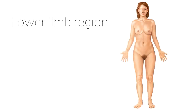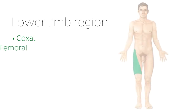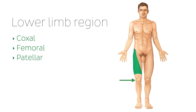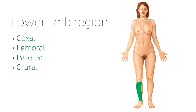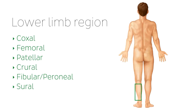Now let's move on to the lower limb, which has several regions. The coxal region refers to the lateral superior thigh at the level of the hip. The femoral region refers to the thigh. The patella region refers to the knee. The crural region refers to the anterior lower leg. And the fibular, or peroneal region, refers to the medial aspect of the lower leg. On the posterior surface, the patella and crural regions are absent — the crural region is replaced by the sural region referring to the posterior lower leg, and the patella region is replaced by the popliteal region referring to the posterior knee.